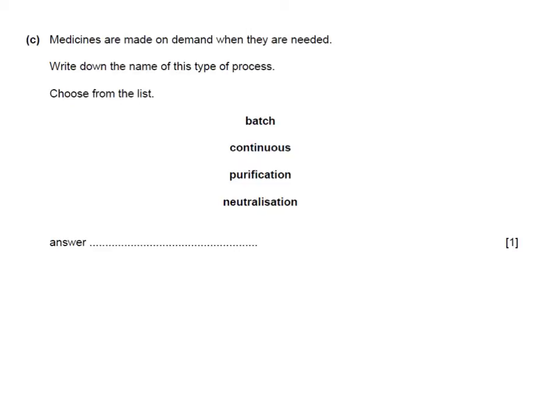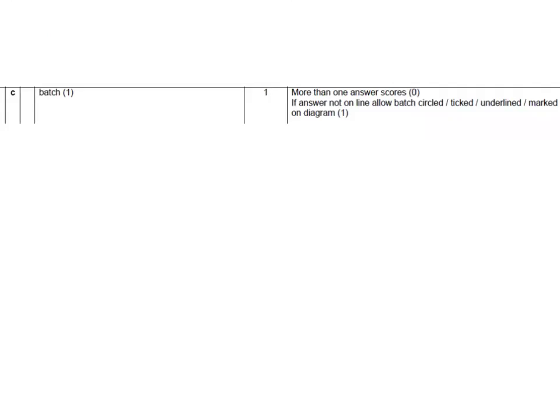Here's a past paper question: 'Medicines are made on demand when they're needed. Write down the name of this type of process — choose from the list.' This would be a batch process. It's not really anything else accepted there because it was a multiple choice question.